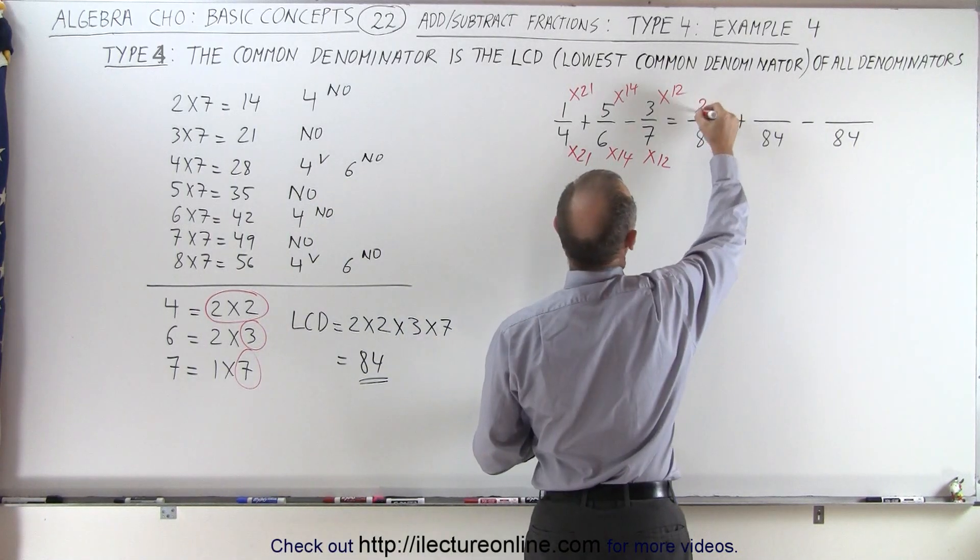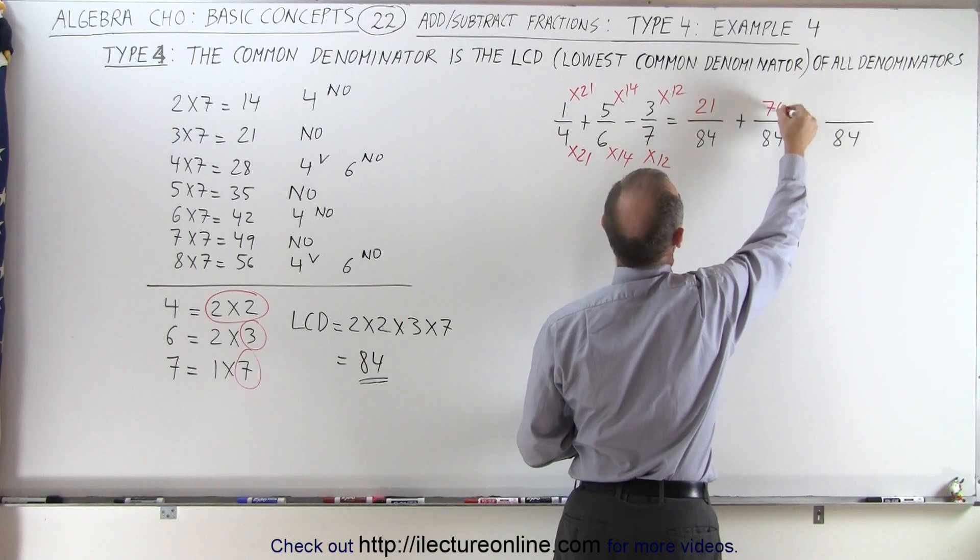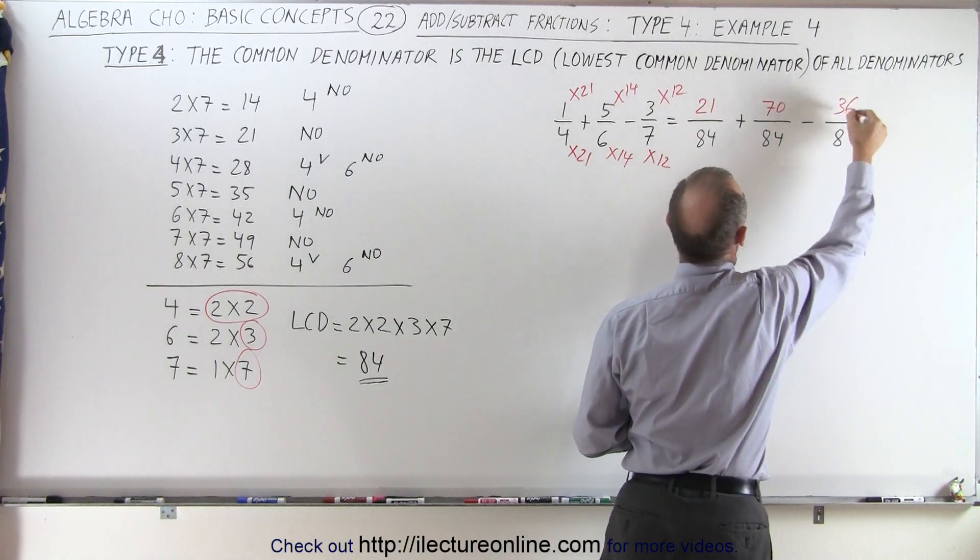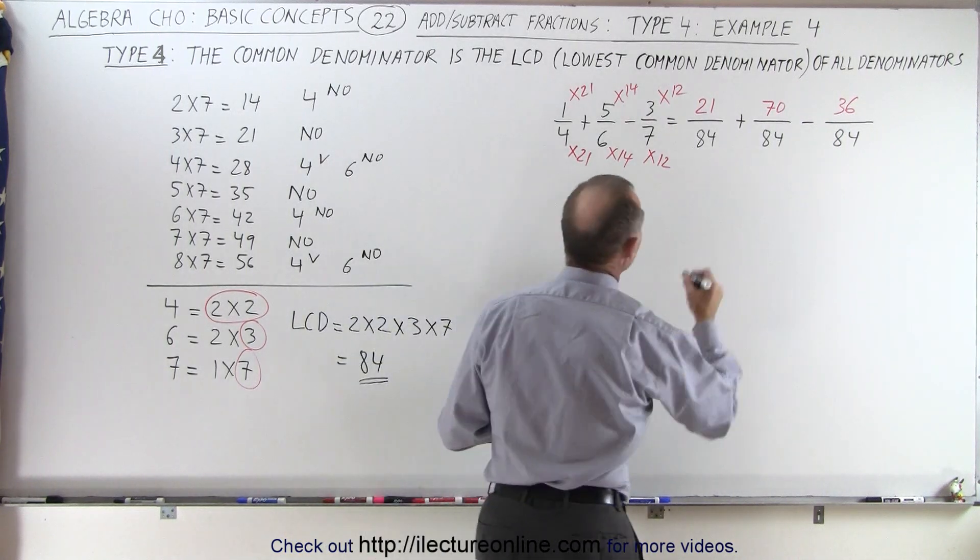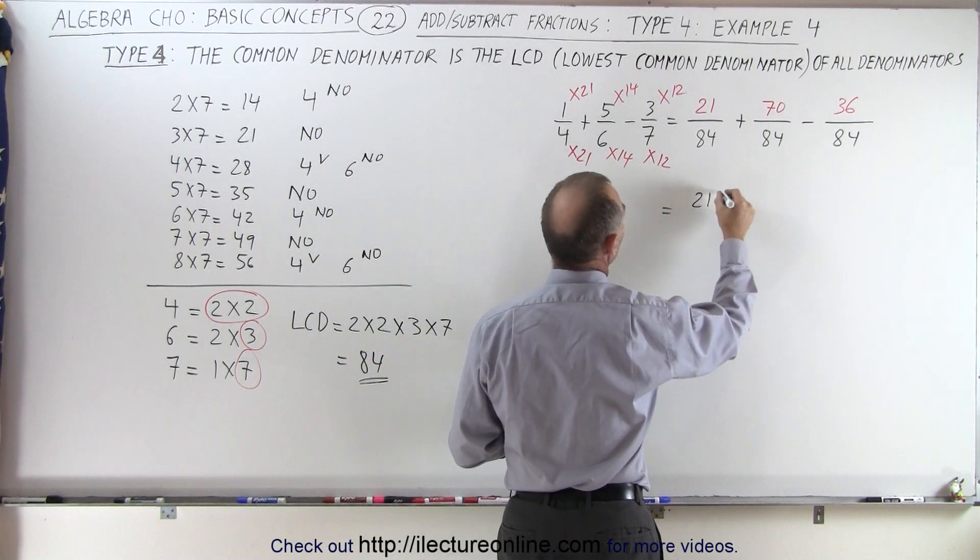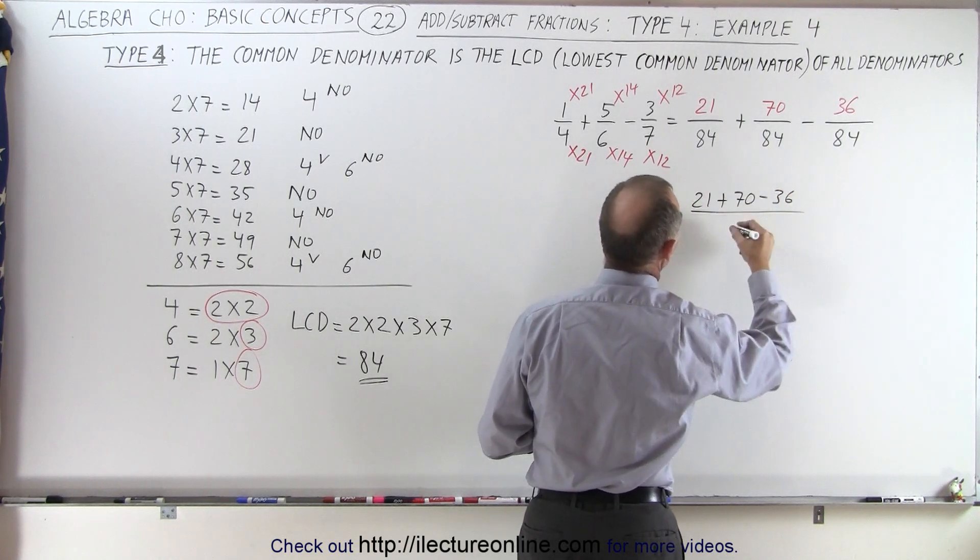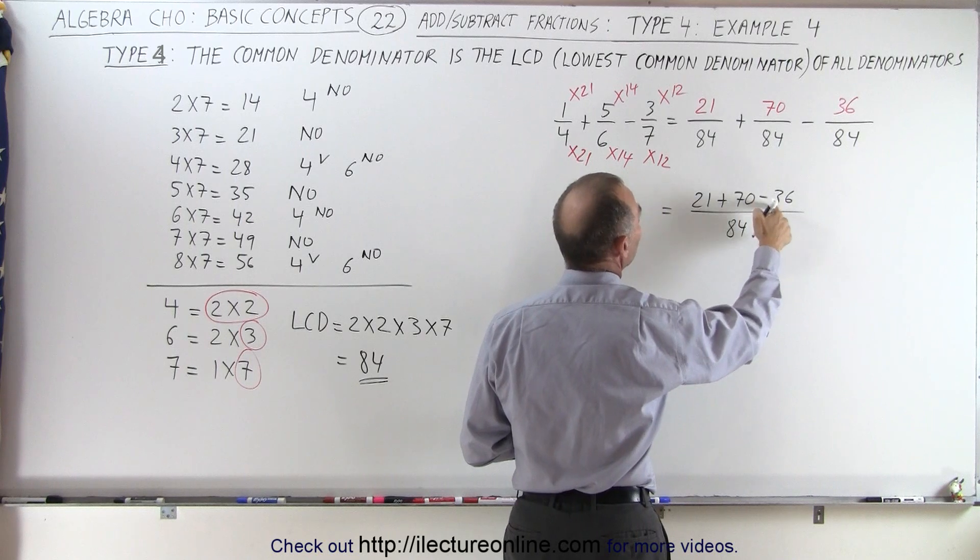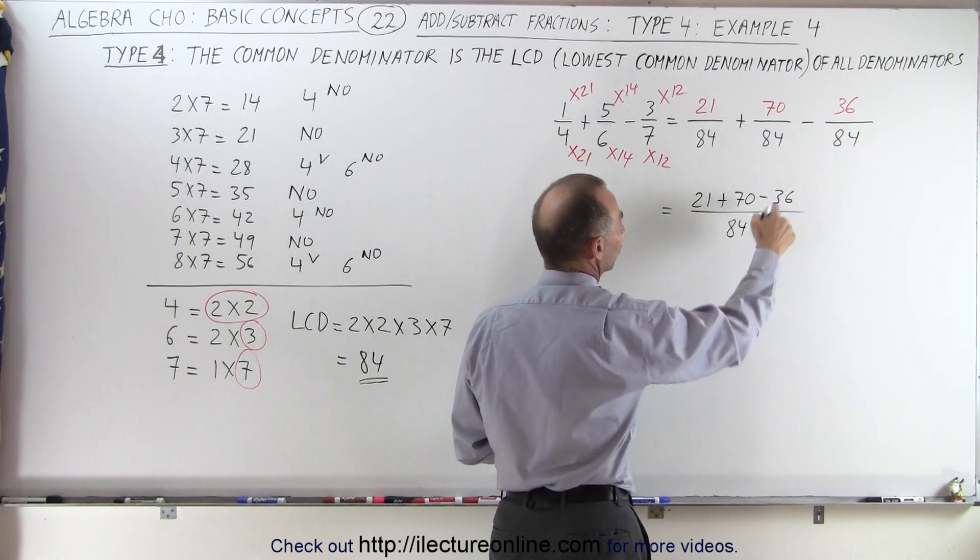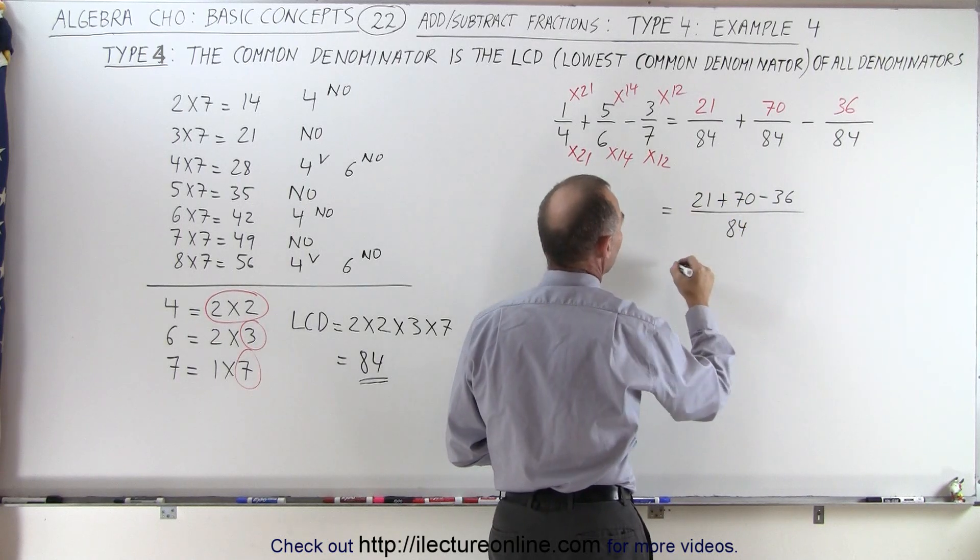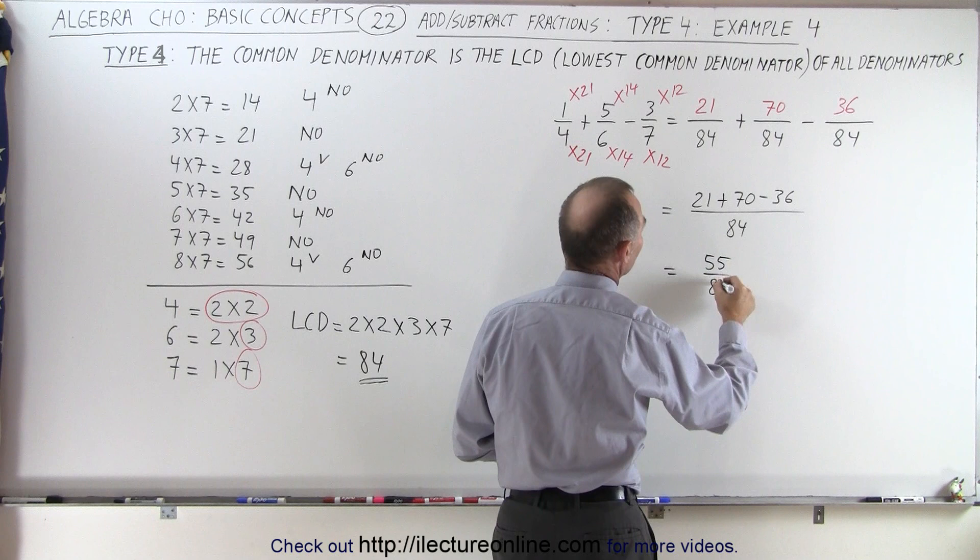So that's how we find what the new corresponding numerators will be. Here it will be 21. 5 times 14 is 70, and 3 times 12 is 36. So now the fraction will become the following. This is equal to 21 plus 70 minus 36, all divided by the common denominator of 84. 70 minus 36 is 34, because 34 plus 36 is 70. So 34 plus 21, that gives us 55 over 84.